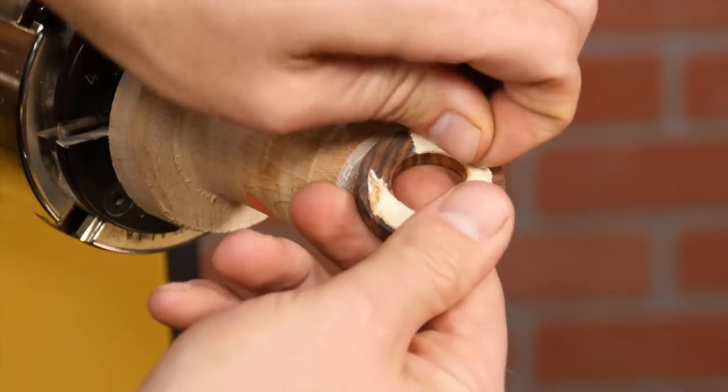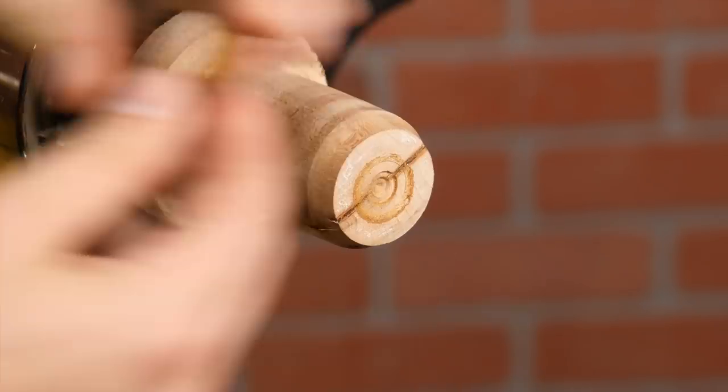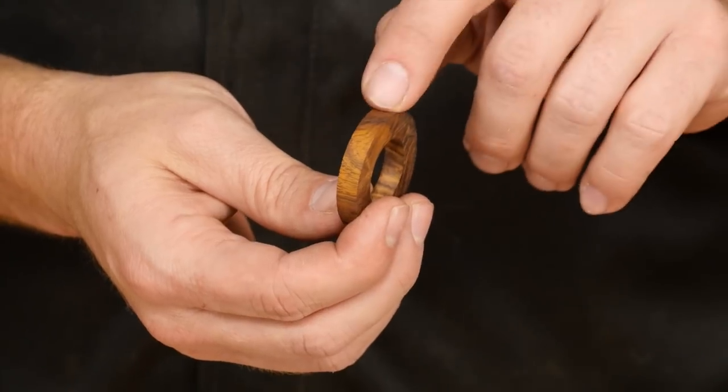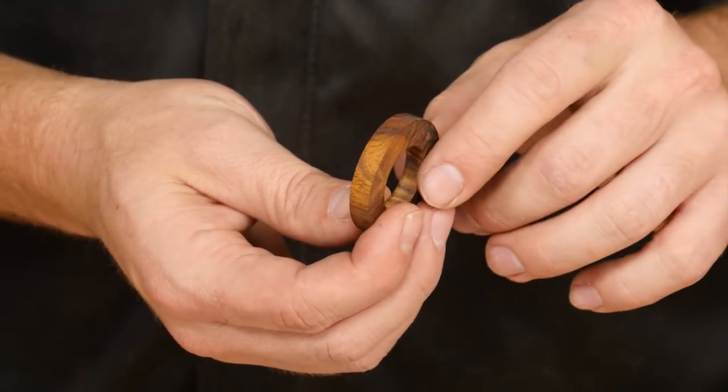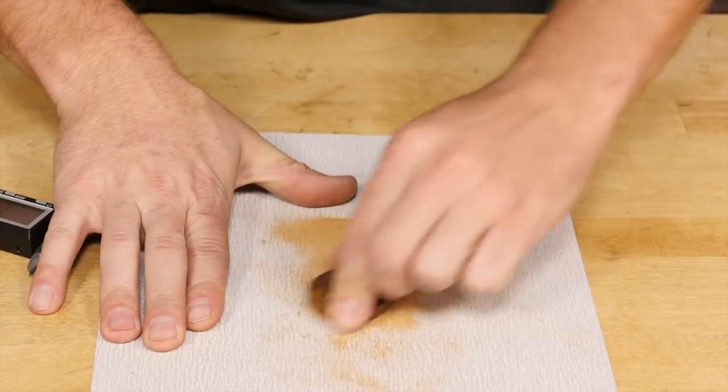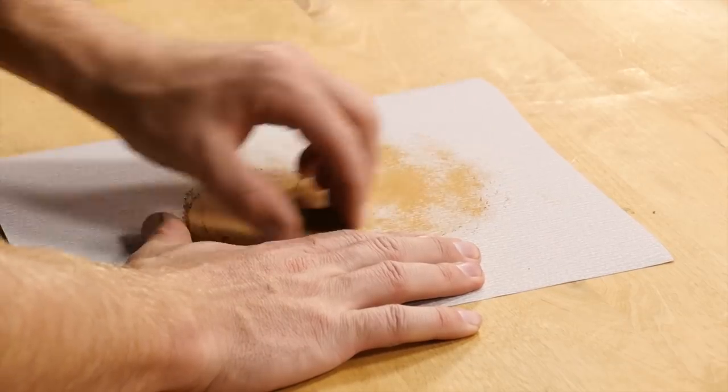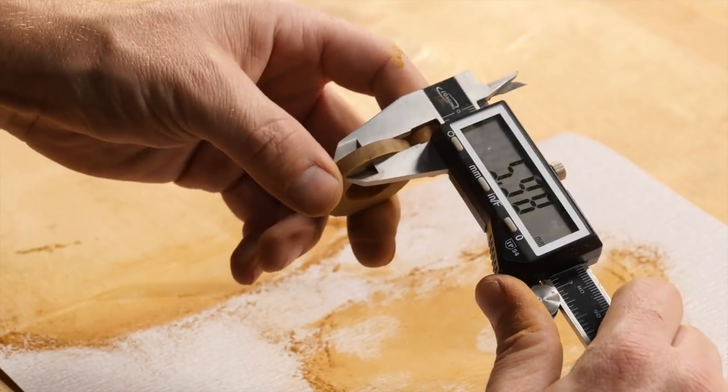Now take the core off the lathe and remove any double-sided tape. It's critical here that the blank is exactly six millimeters wide for a perfect fit. To do this lay the blank on a piece of sandpaper and sand in a figure eight pattern until your blank is exactly six millimeters wide. And use your digital calipers often to check the width.